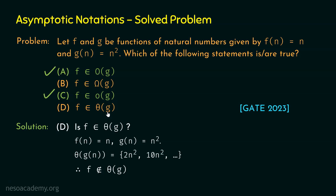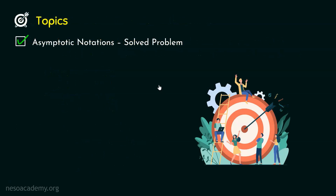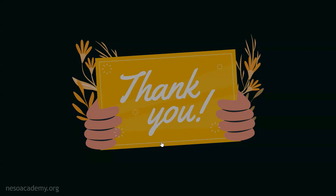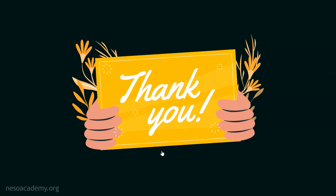In summary, statements A and C are correct, while statements B and D are not. This is how we solve problems involving the 'belongs to' form of asymptotic notations. Thank you for watching.